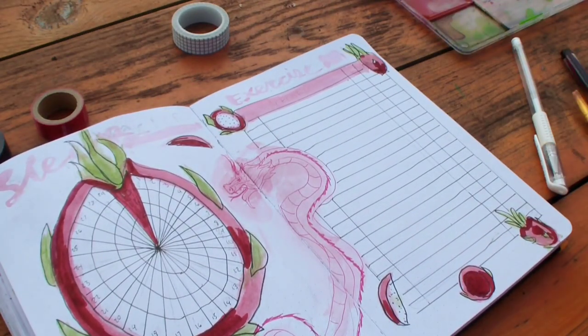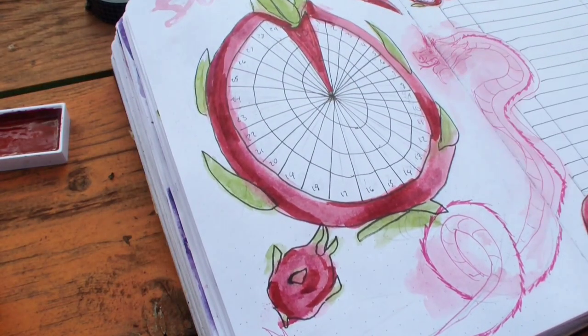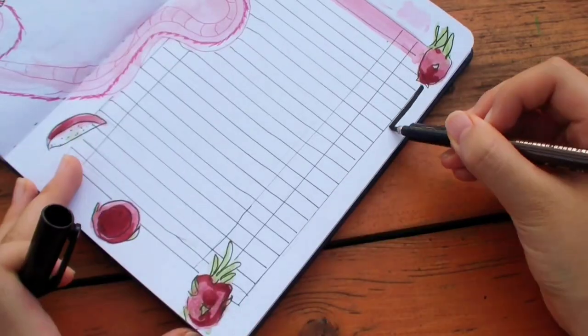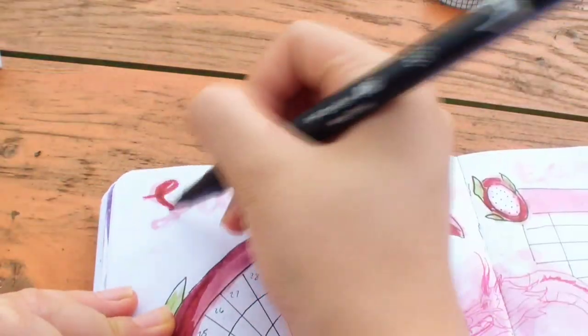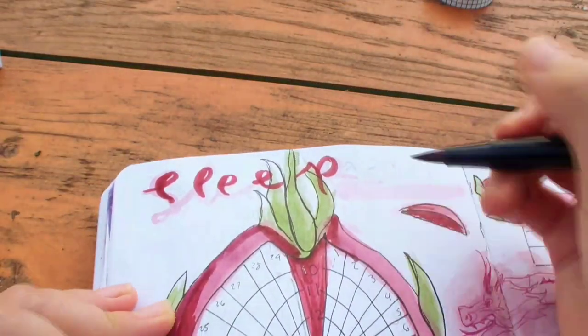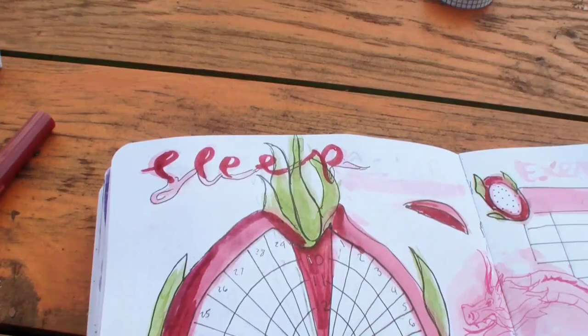I'm just blending out the marker on the edges of the sleep tracker. This will make it look like a smooth blend and it will disguise the marker and make it look like watercolor. Again, I'm using this black drop shadow. It adds a lot of contrast. I finished up the heading by using the same watercolor technique with markers.